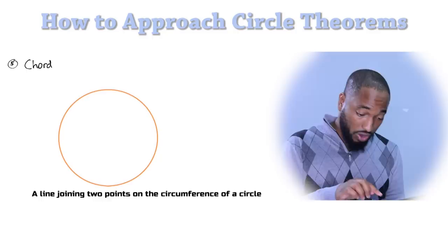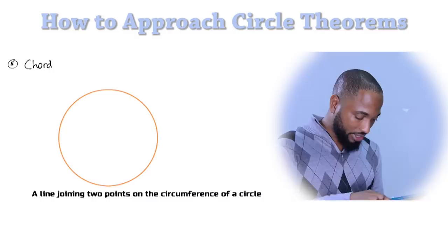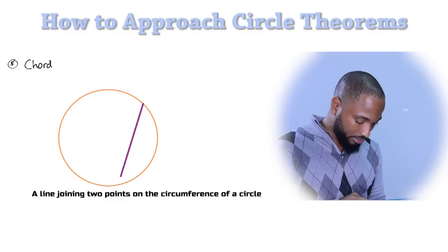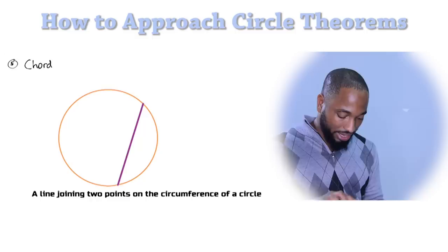Alright, so number five, we're getting into the good stuff. Chords. You need to understand what a chord is. A chord is a line joining two points on the circumference of a circle. Let's draw a chord. One point. That chord looking kind of skinny, but let me get a bigger one. Okay, let's do like about that size. Maybe about seven pixels, six, seven. Okay. There you go. That's a chord. And a chord divides a circle into two segments. Major segment and a minor segment. So you have the major segment there and you have the minor segment there.